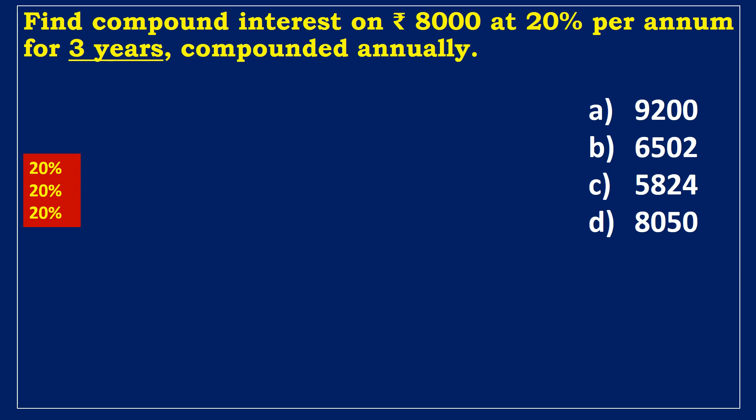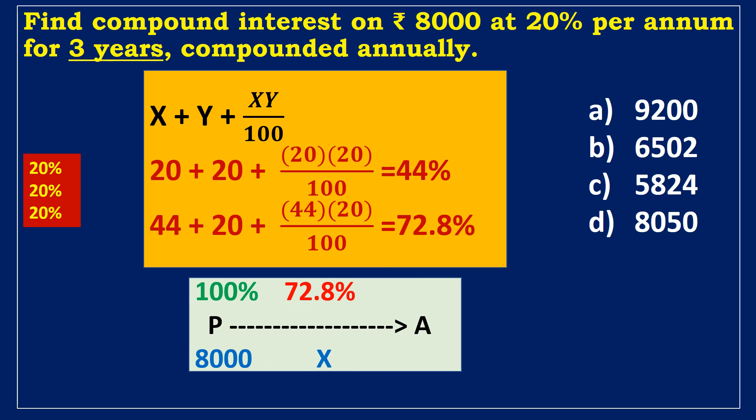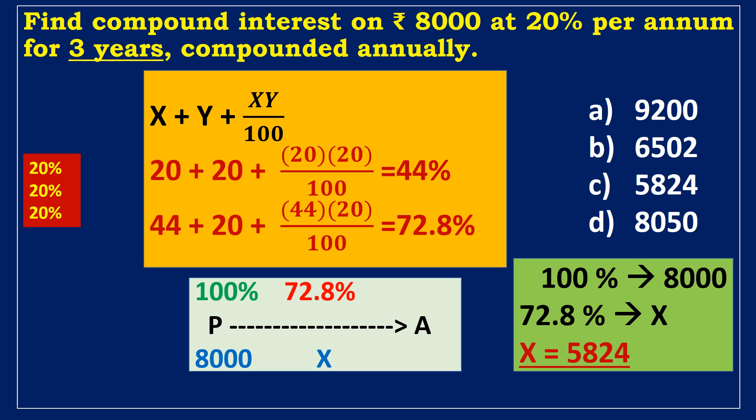Next example: Find the compound interest on 8000 rupees at 20% per annum for three years, compounded annually. Using effective percentage: CI rate for 20% in two years is 44%. For three years: 44 + 20 + (44×20)/100 = 72.8%. CI rate for 20% in three years is 72.8%. Assuming principal is 100%, CI is 72.8%. If 100% = 8000, then 72.8% = x. Cross-multiplying gives CI = 5824 rupees.